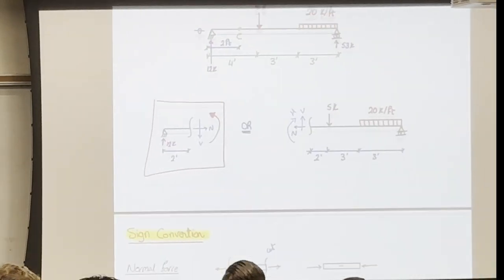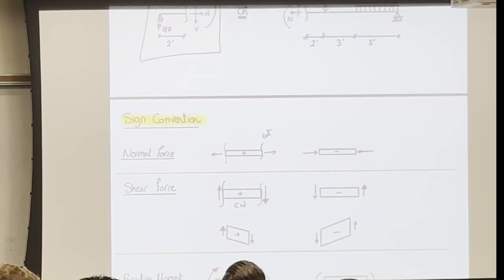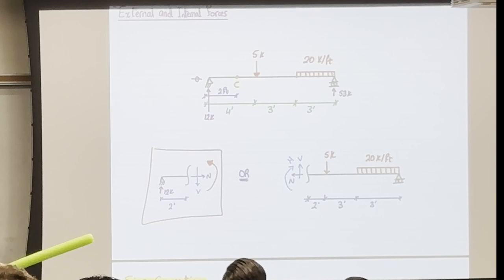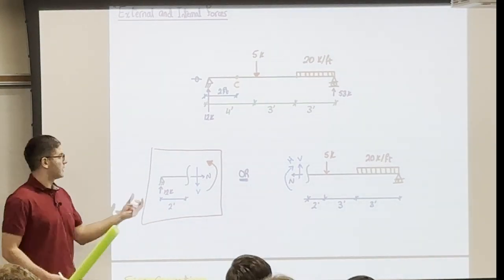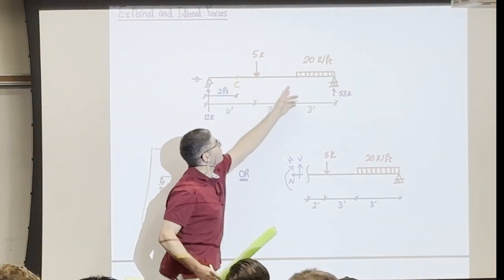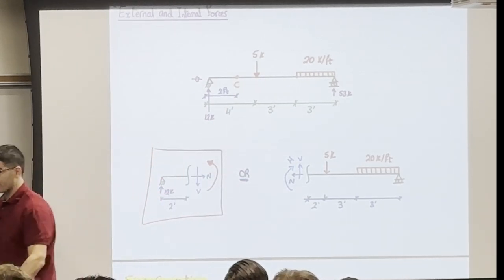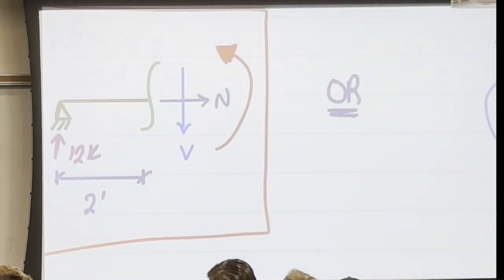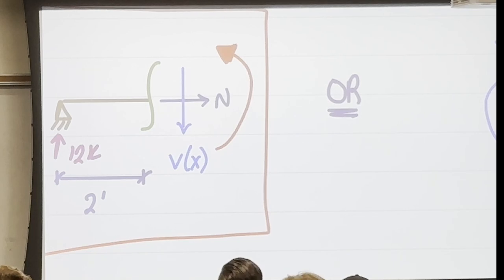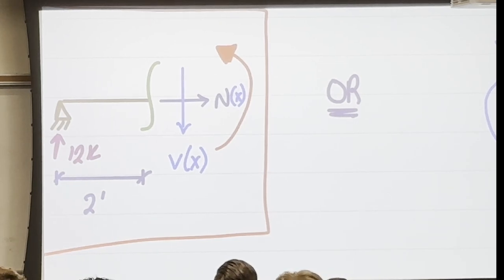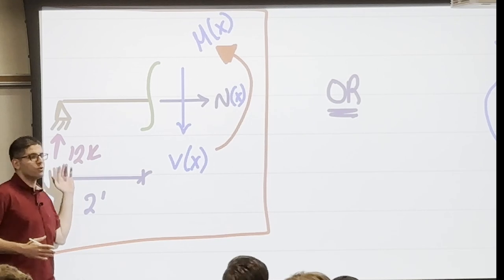The whole point of this class is: instead of getting individual force values like we did in lecture zero, we want to generate a function in terms of x — the beam length. So whenever I substitute an x-value into V(x), I get the shear at any point. Same for N(x) and M(x). We're generating functions valid for the whole beam, instead of solving for a single unknown at a time.